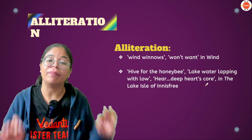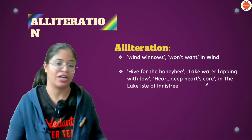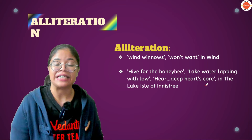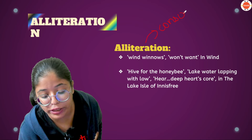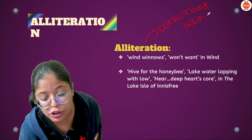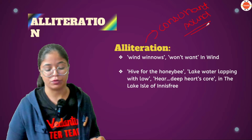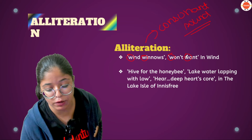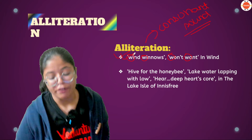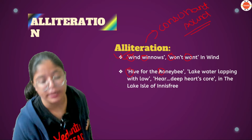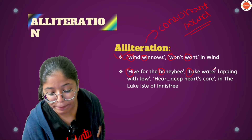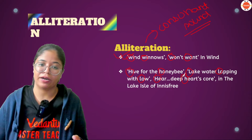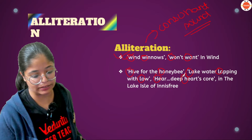Moving ahead — alliteration. What is alliteration? When neighboring words start with the same consonant sound, that is called alliteration. For example, 'wind winnows' — both 'wind' and 'winnows' begin with the same 'w' sound. In 'The Lake Isle of Innisfree,' 'High for the honeybee' — the 'h' sound repeats. 'Lake water lapping with low sounds' — the 'l' sound repeats at the beginning of neighboring words. 'I hear it in the deep heart's core' — the 'h' sound again. When neighboring words begin with the same consonant sound, that is alliteration.